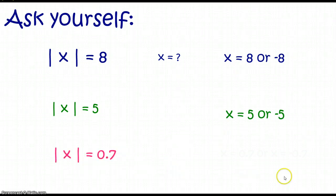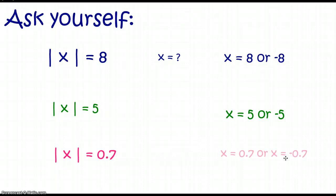It doesn't matter if we have whole numbers, fractions, or decimals. The absolute value of X is 7 tenths — that means we could have two values: 7 tenths or negative 7 tenths.